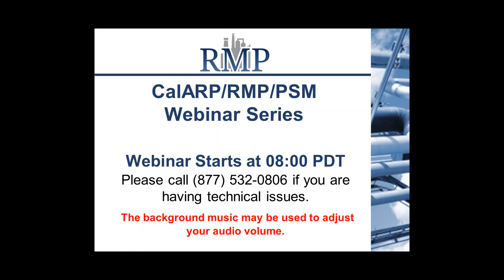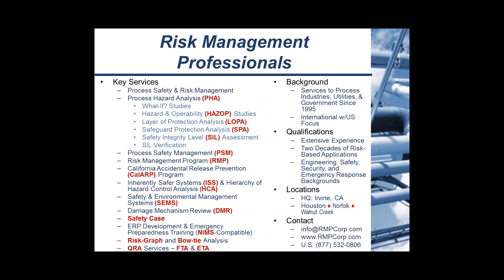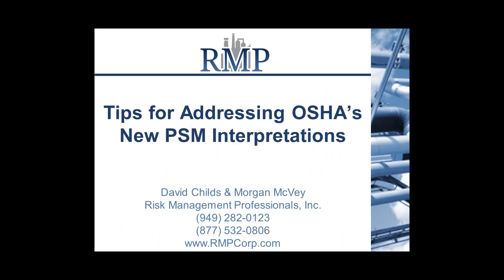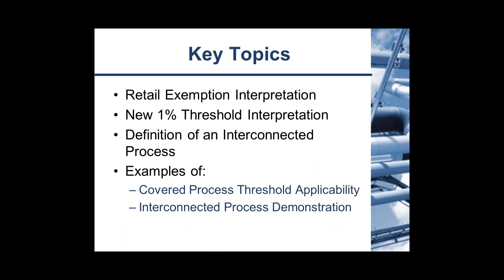As Steve mentioned, we're going to be going through a few new interpretations to OSHA's PSM program. The first one is the retail exemption interpretation — whether or not your facility would qualify for exemption based on a retail classification. The second is a 1% threshold interpretation, which applies to the highly hazardous chemicals list that OSHA holds. We'll go over a quick definition of what an interconnected process is and how that applies to the PSM program. Then we'll go through some examples of how to calculate whether or not your process would be covered.